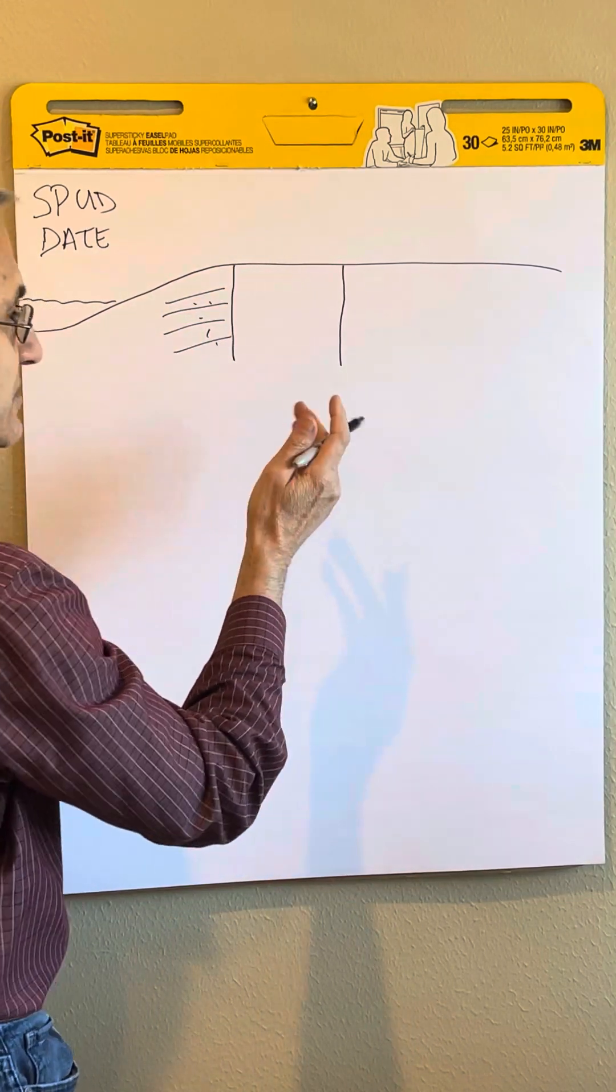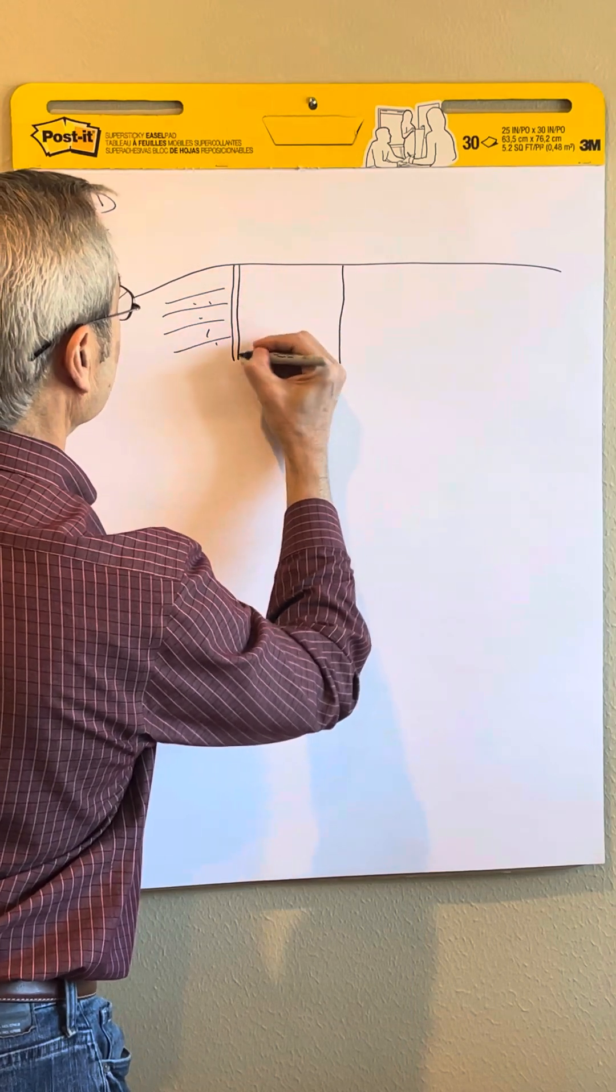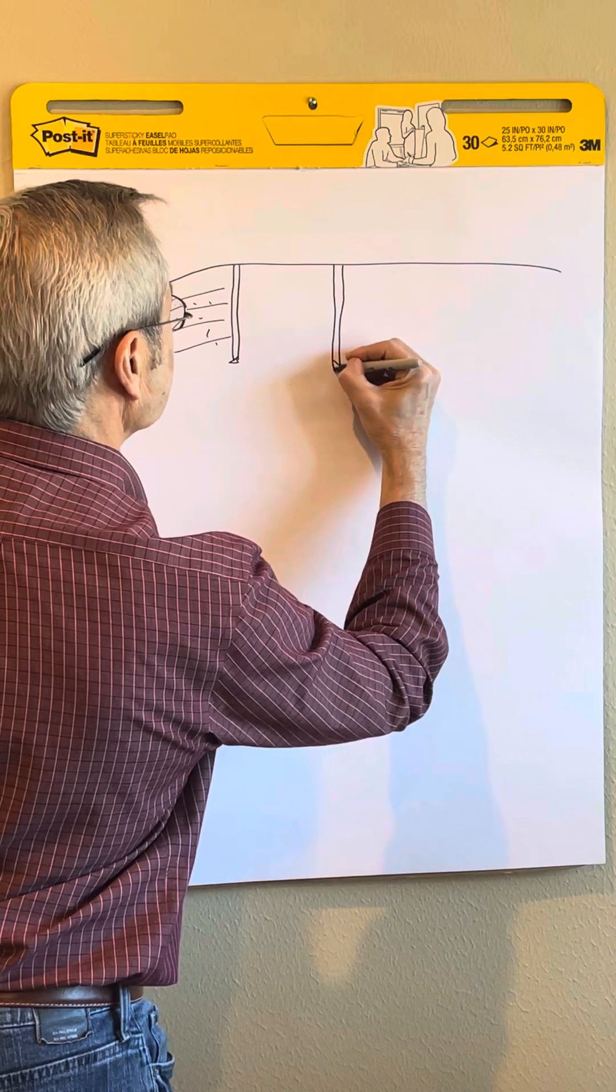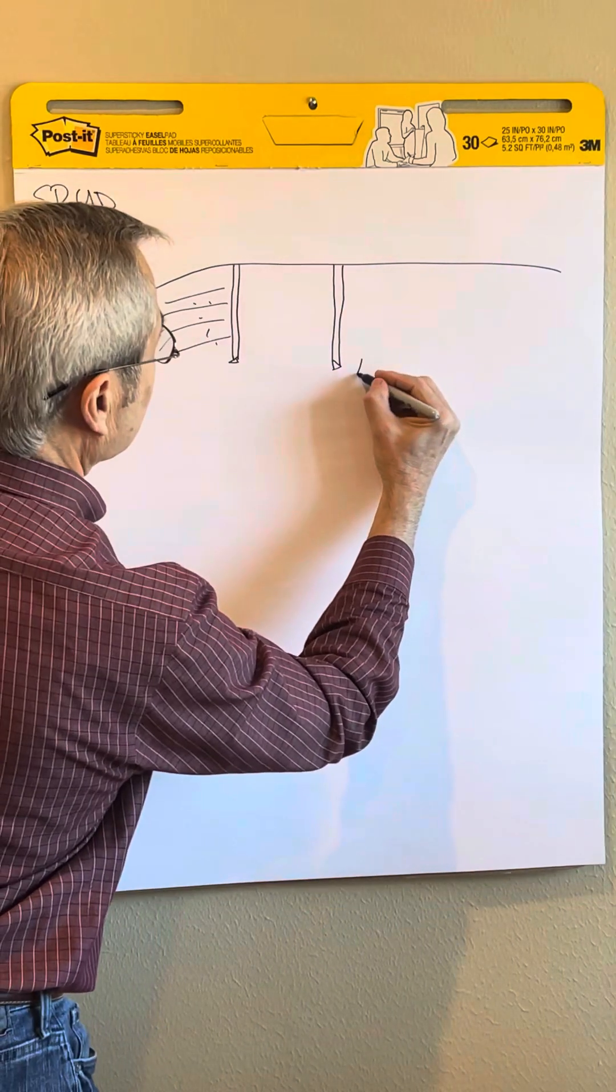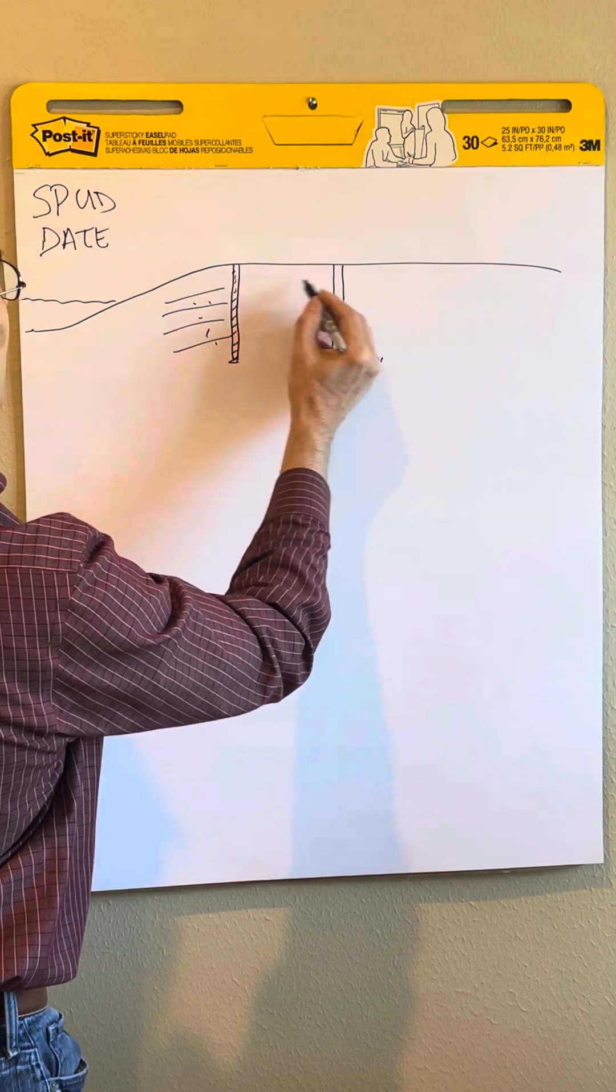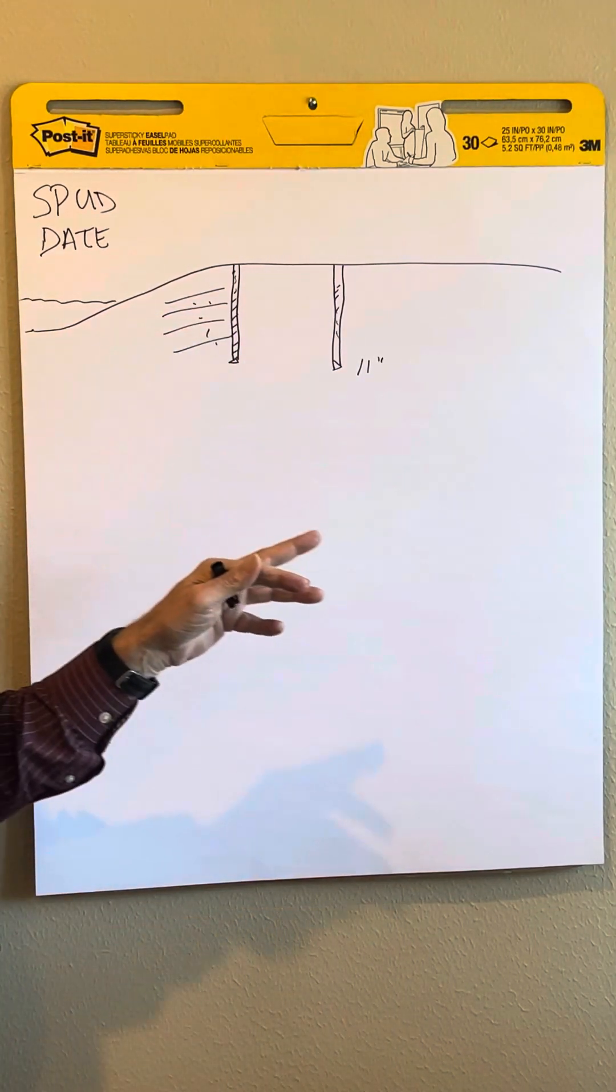Then you run a piece of pipe in there called the surface casing or surface pipe. That might be like an 11-inch piece of pipe, and you cement that in there with cement between the hole and the pipe. This protects all the drinking water from being contaminated by the drilling.